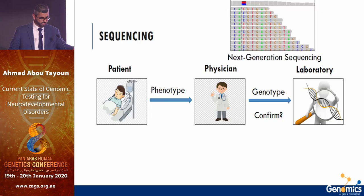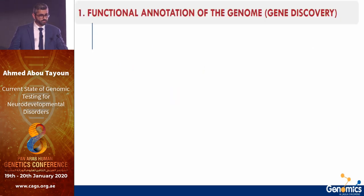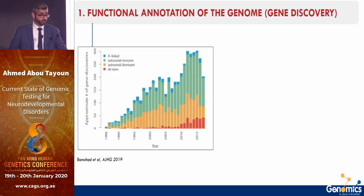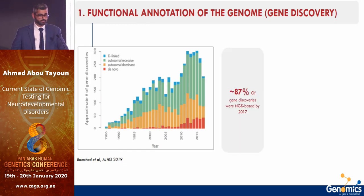Something changed. Next-generation sequencing emerged after 2005, which was a paradigm shift in clinical genetic testing. One key development was the acceleration of functional genome annotation — the rate of gene discovery grew exponentially, such that by 2017, 90 percent of all gene discoveries had been made using NGS technology, including discoveries in neurodevelopmental disorders.